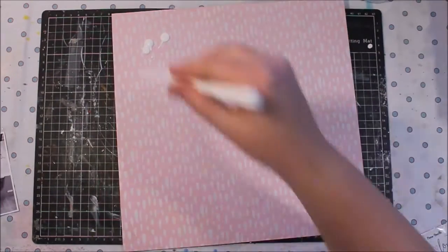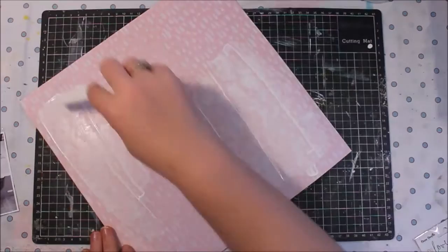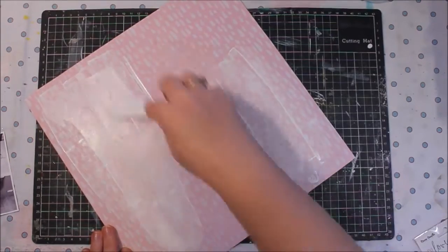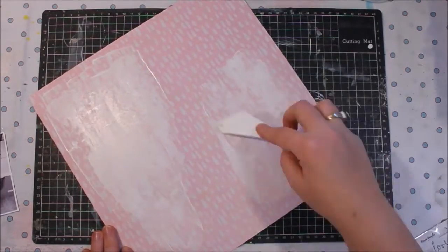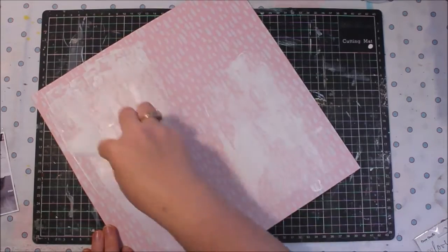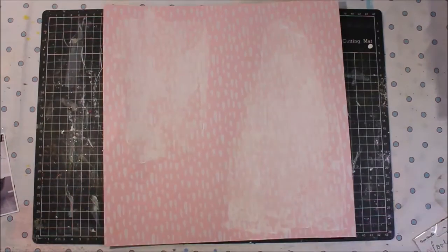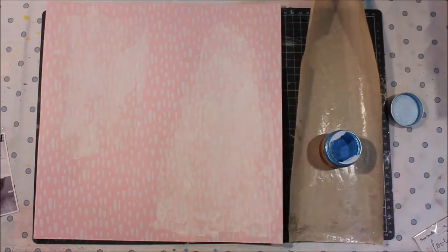So the first thing I'm going to do is just use a spatula to spread some white gesso around on this background paper. I'm kind of going with two sort of triangle themes, one in the top left and one in the bottom right.